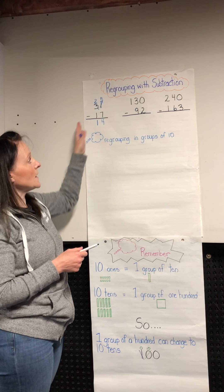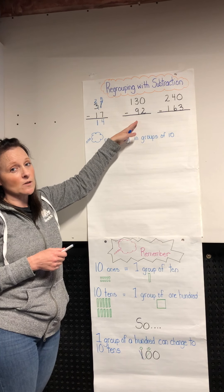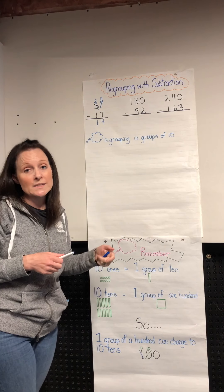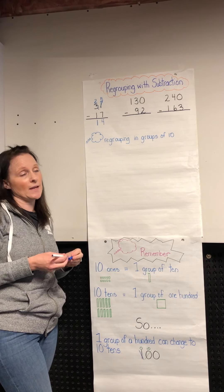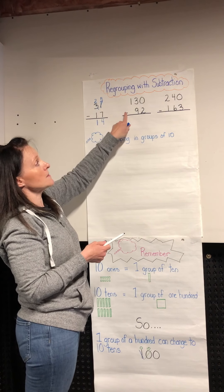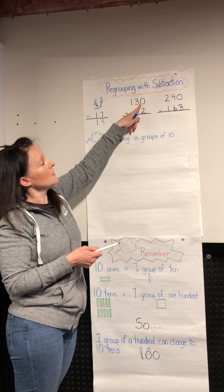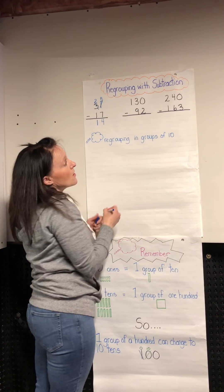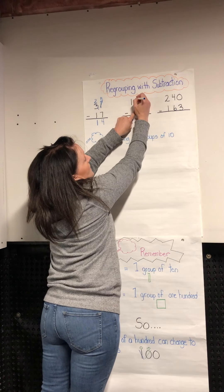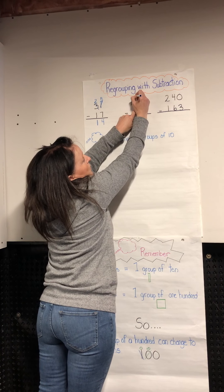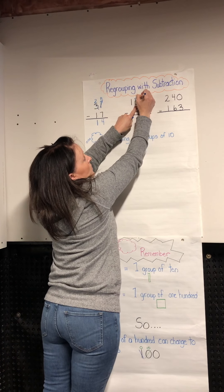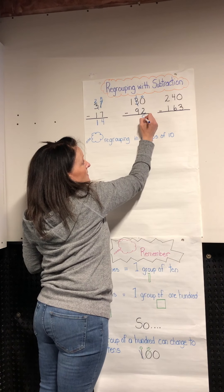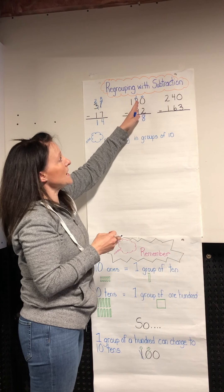Let's go to the next question. If you want, pause the video, get a piece of paper and a pencil, and we can do this one together. We look — oh, we've got a zero. Zero take away two: we have nothing and we can't give away two things. So we go over into our tens column. We have a three, so we can borrow from that. I had three, so I'm borrowing one group of ten and I have two left. I bring my group of ten over — there was nothing there — so now I just have ten. Ten take away two is eight.